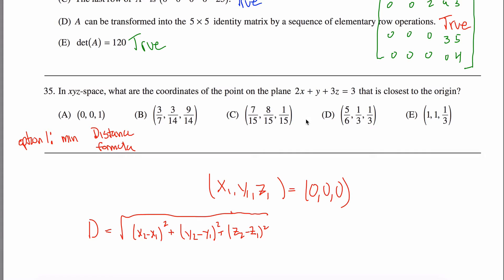You could also, since you have these points right here, you can kind of plug them into this formula to see which one gives you the smallest distance. That'd be kind of tedious, especially with the square root formula.